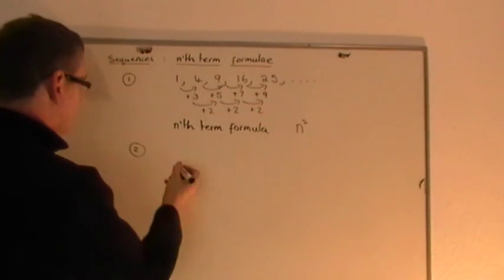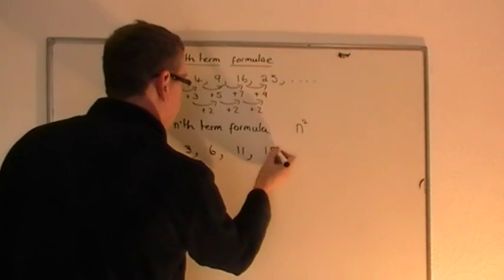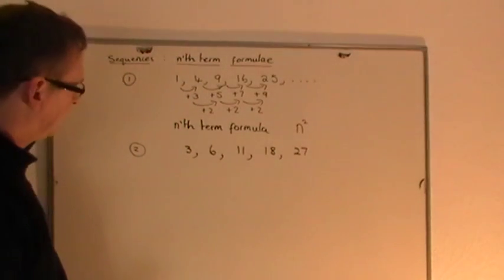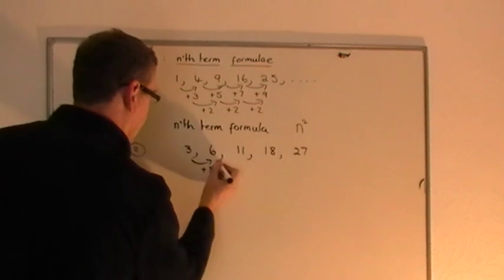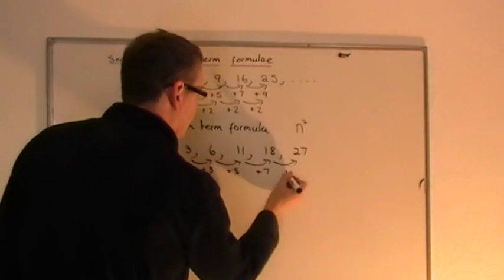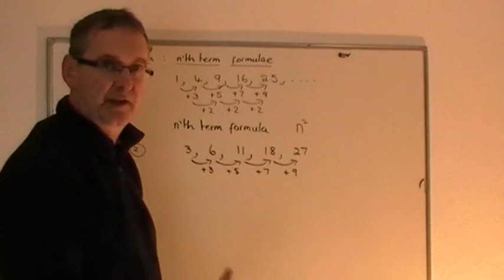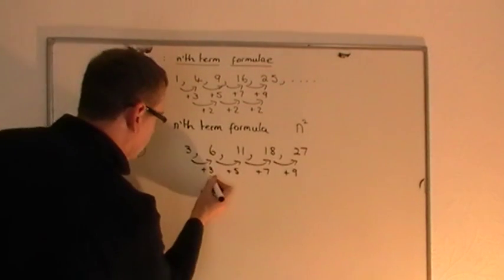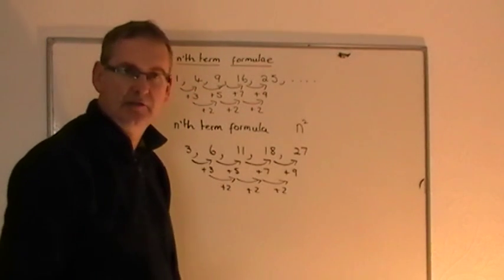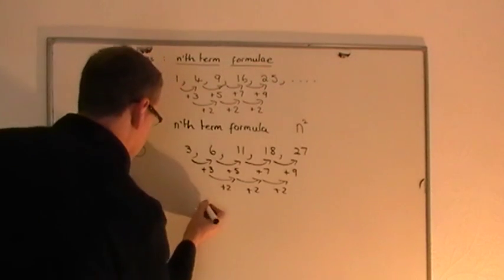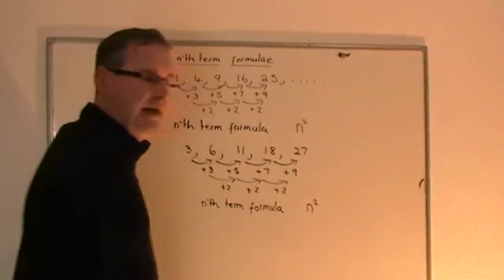So if I give you a second one — slightly more difficult — let's say you've got 3, 6, 11, 18, and 27. You've got to find the nth term formula. You start by saying: we're adding 3, then adding 5, then adding 7, then adding 9. You can see they're not the same common differences, so it's not going to be something like 3n+1. Looking at the second differences: plus 2, plus 2, plus 2 — the second difference is constant, so the nth term formula will involve n squared.